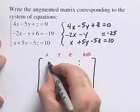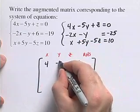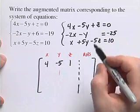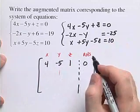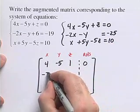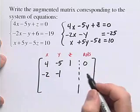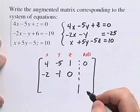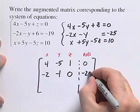So here we get 4, negative 5, 1 - there's this implied coefficient of 1 - and the right-hand side is 0. Our next equation, we'll have negative 2, negative 1. There's no z term, so we're going to use 0 as our coefficient, and the right-hand side is negative 25.